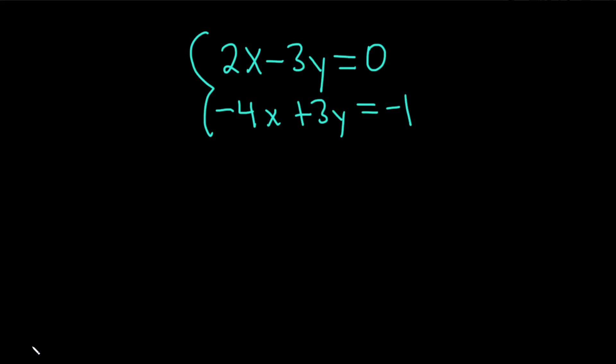Hi, in this video we're going to solve this system of equations. We have 2x minus 3y equals 0 and negative 4x plus 3y equals negative 1. Let's go ahead and work through it.